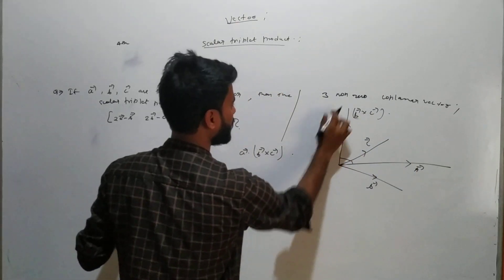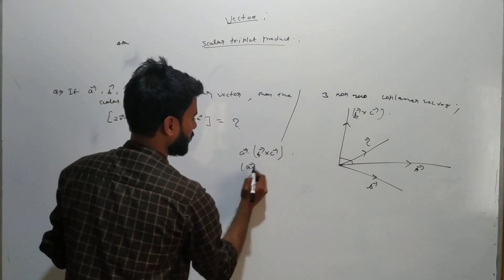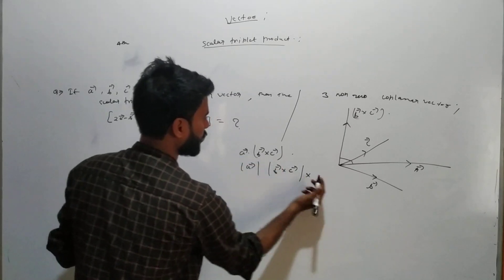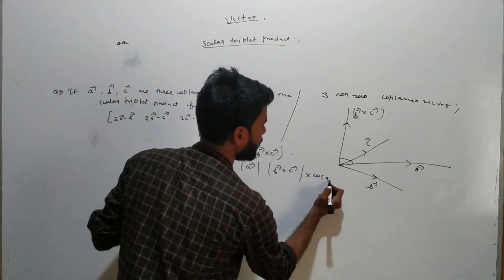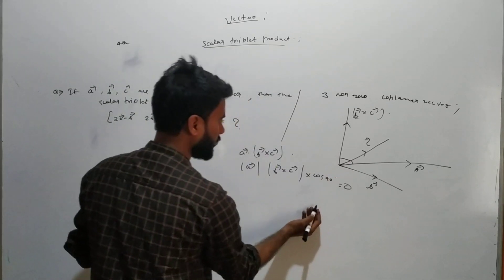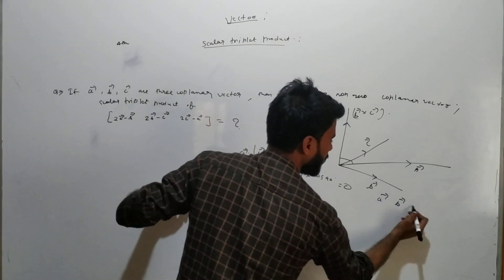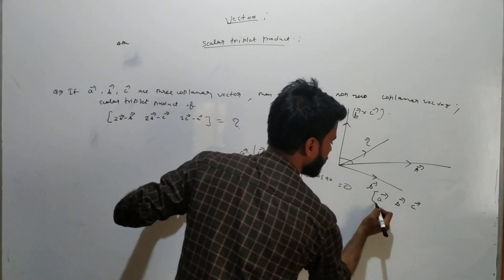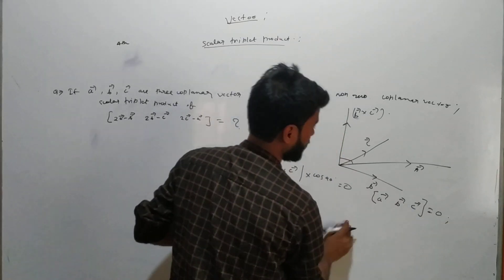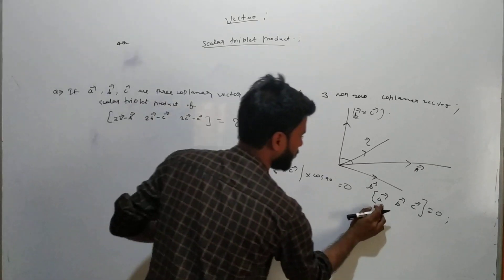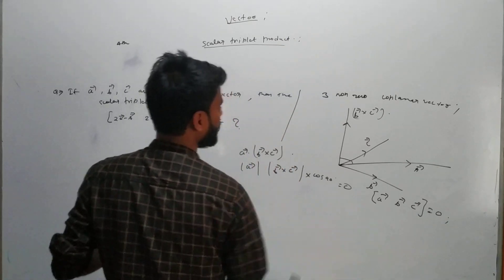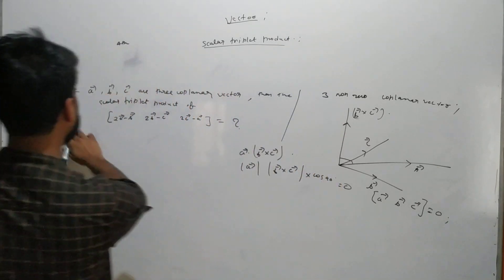So B cross C is perpendicular to the plane. And A dot (B cross C), since the angle between them is 90 degrees, cos 90 equals zero, so the whole thing is zero. That is, the scalar triple product — the box product — [A, B, C], when all three are coplanar, is equal to zero. Based on this theorem, we will solve the question.